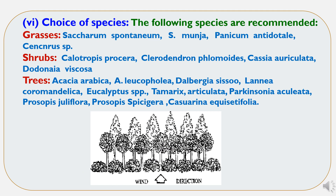The sixth characteristic is choice of species. There are different species recommended for use as shelter belts, of three types: first, grasses such as Saccharum spontaneum (munja), Panicum antidotale, etc.; second, shrubs such as Calotropis procera, Cassia auriculata, and Dodonaea viscosa; and third, trees such as Acacia arabica, Acacia leucophloea, Dalbergia sissoo, etc. These are the different species used as shelter belts.